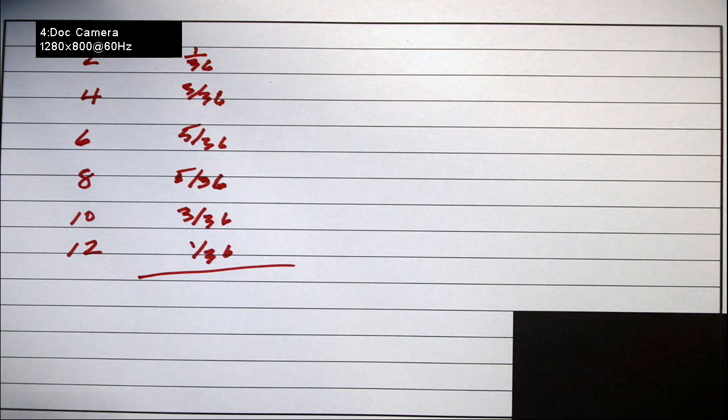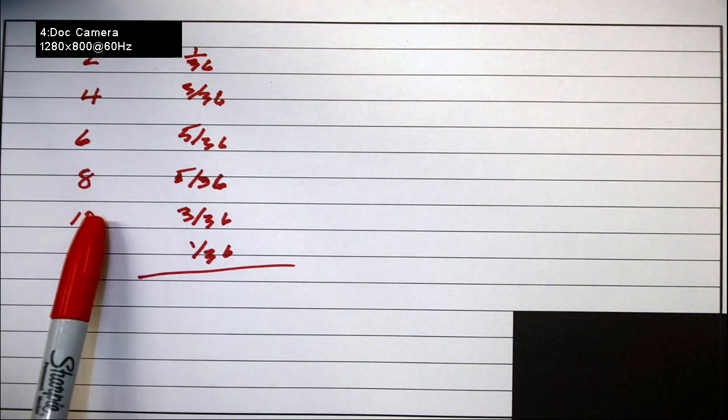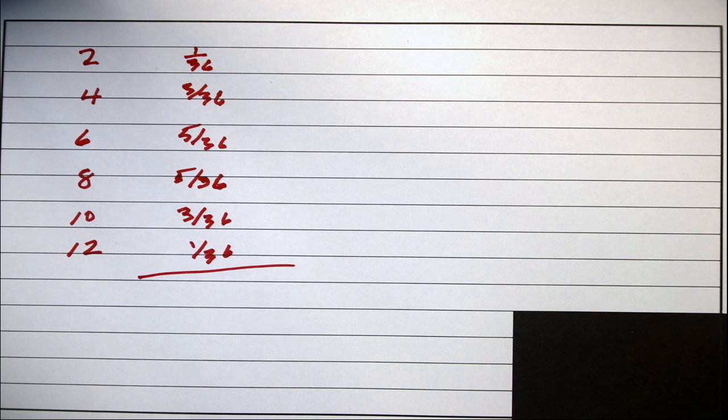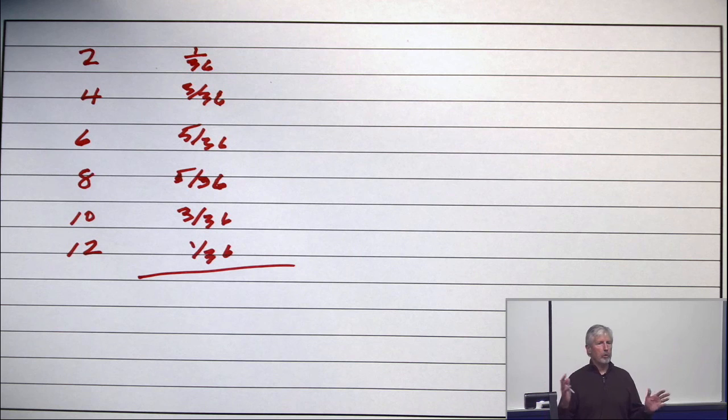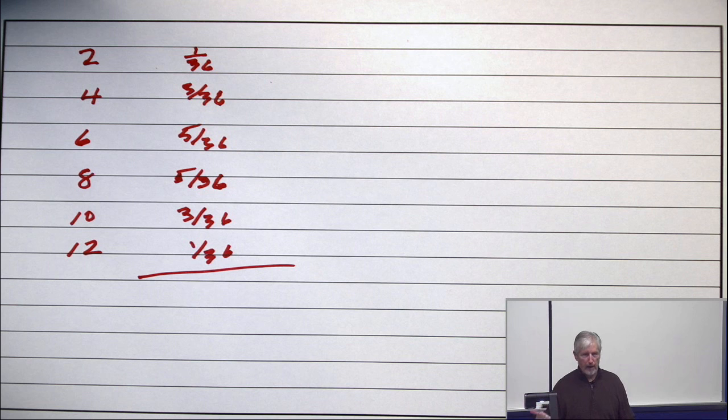The even totals are 2, 4, 6, 8, 10, 12. The probability of a 2 is 1 over 36, the probability of 4 is 3 over 36, because you can get 3, 1, 2, 2, and 1, 3. The probability of a 6 is 5 over 36, because you can do 5, 1, 4, 2, 3, 3, 2, 4, and 1, 5.